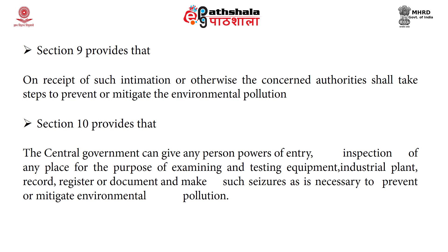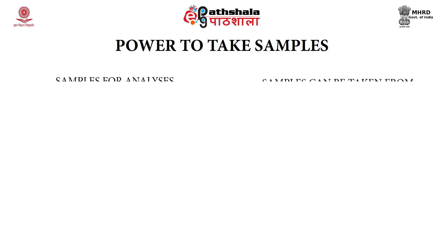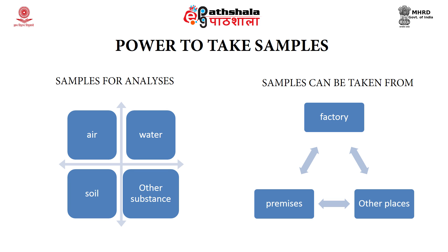Section 10 of the Act provides that the central government can give any person powers of entry and inspection of any place for the purpose of examining and testing equipment, industrial plant, record, register or document, and make such seizures as are necessary to prevent or mitigate environmental pollution. The authorities under the Act also have powers to take samples. Samples for analysis can be taken of air, water, soil and other substances, from a factory, premises or other places as stated in the Act.